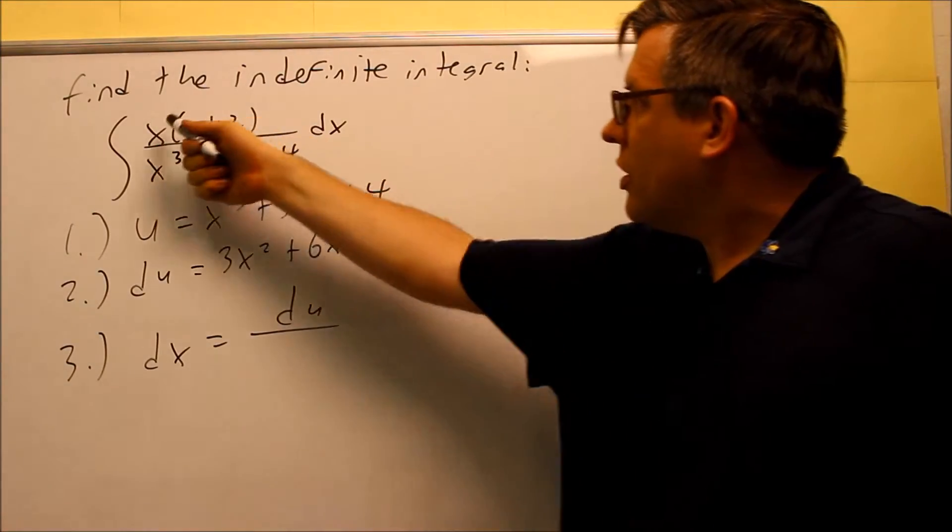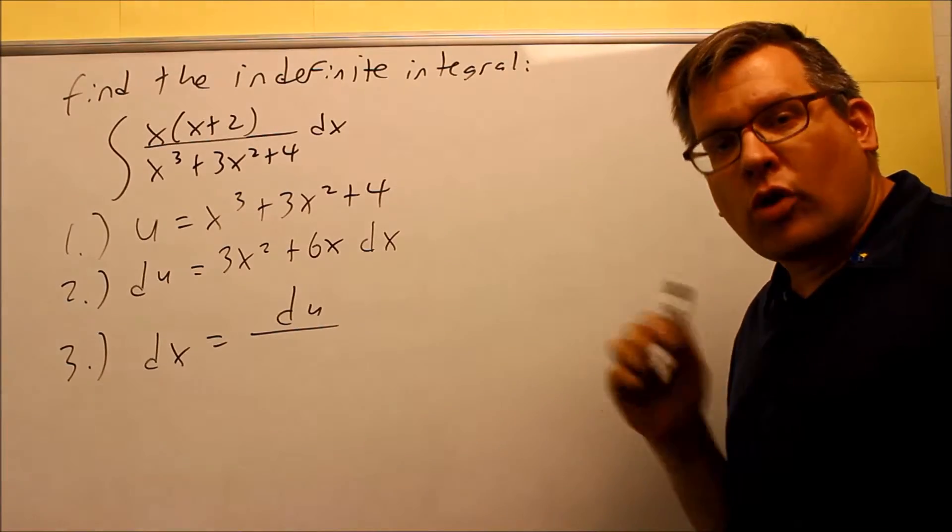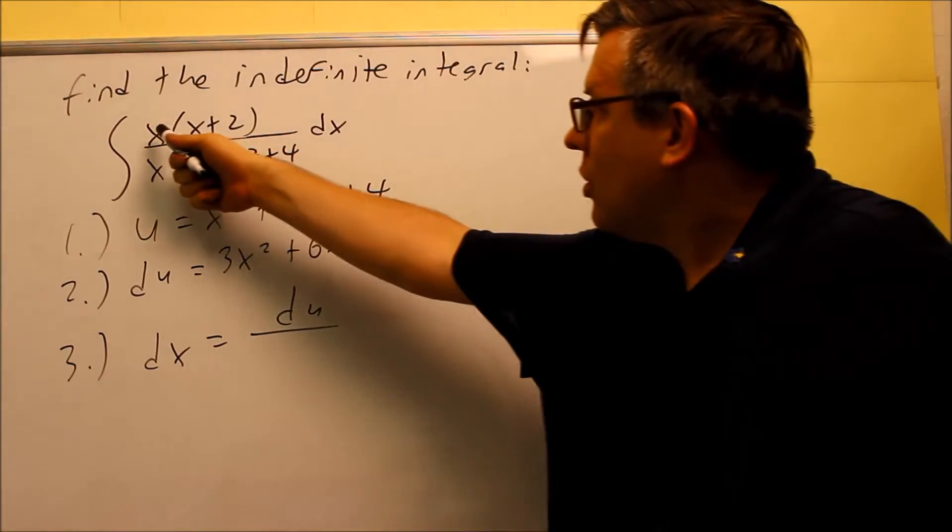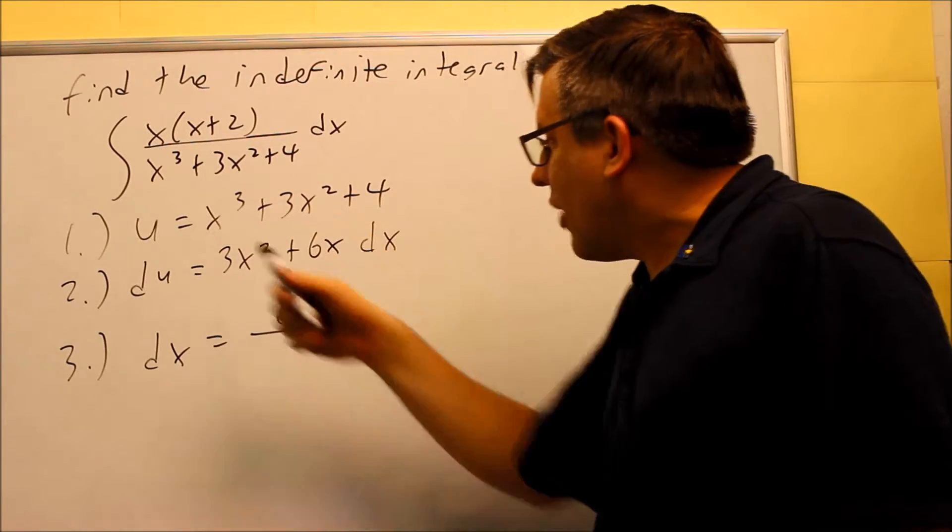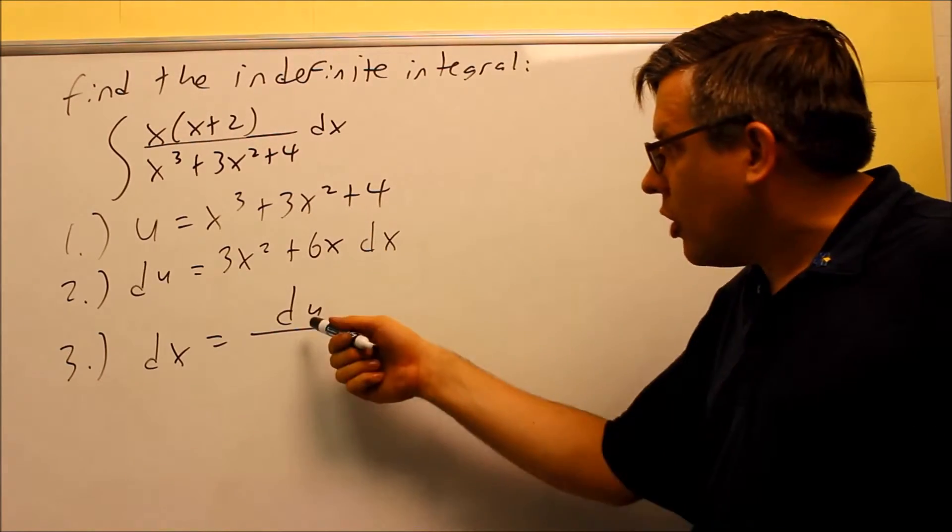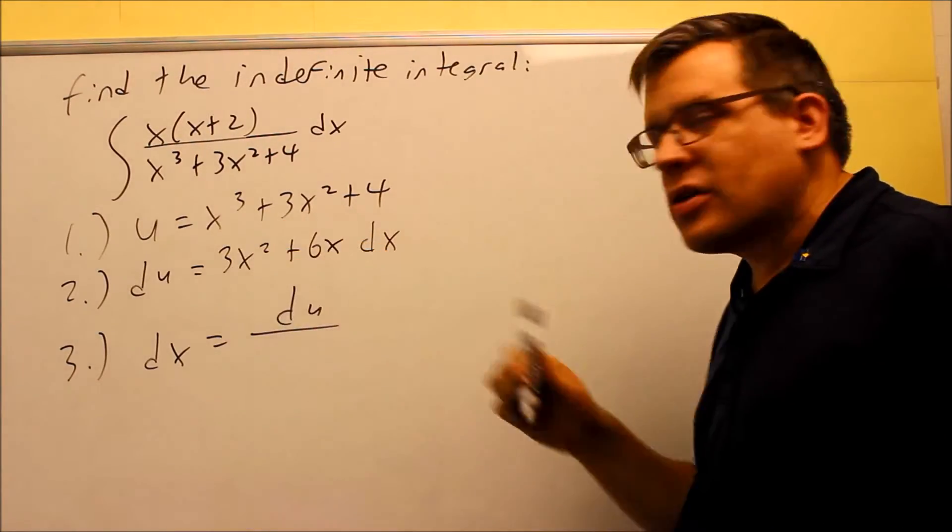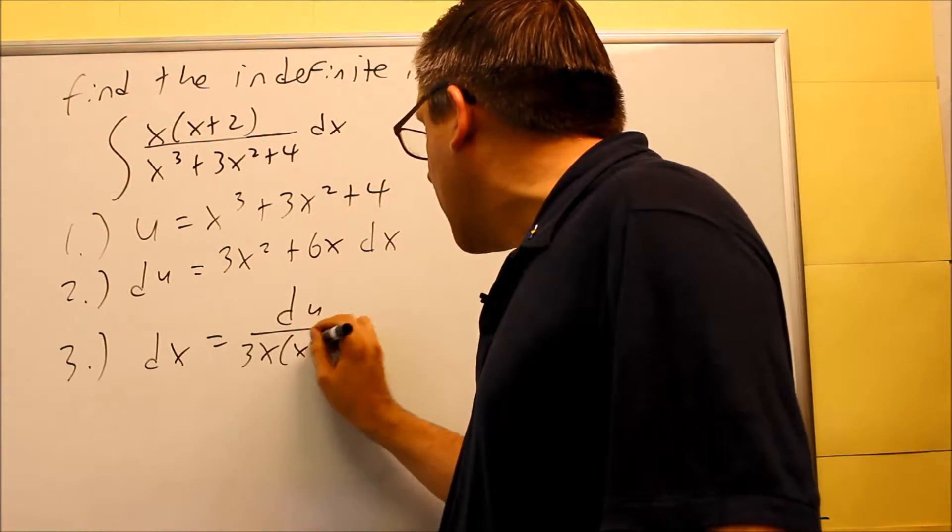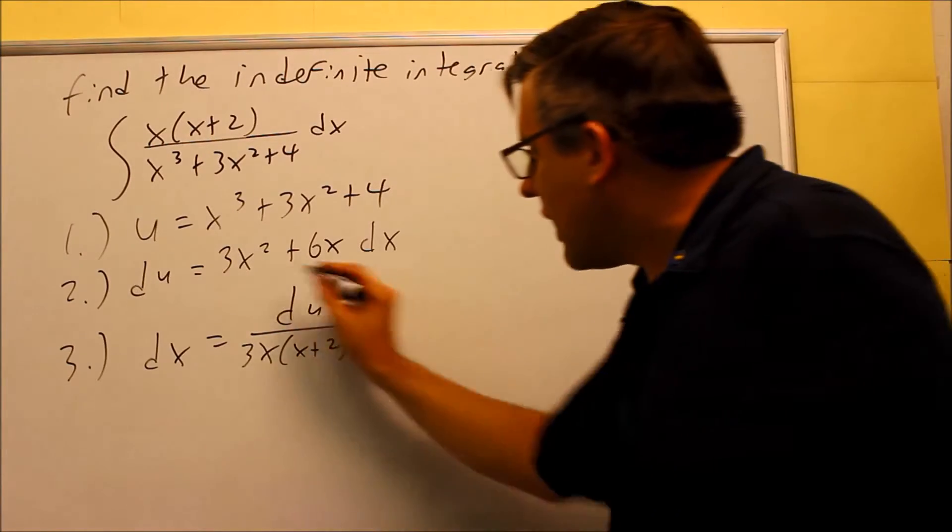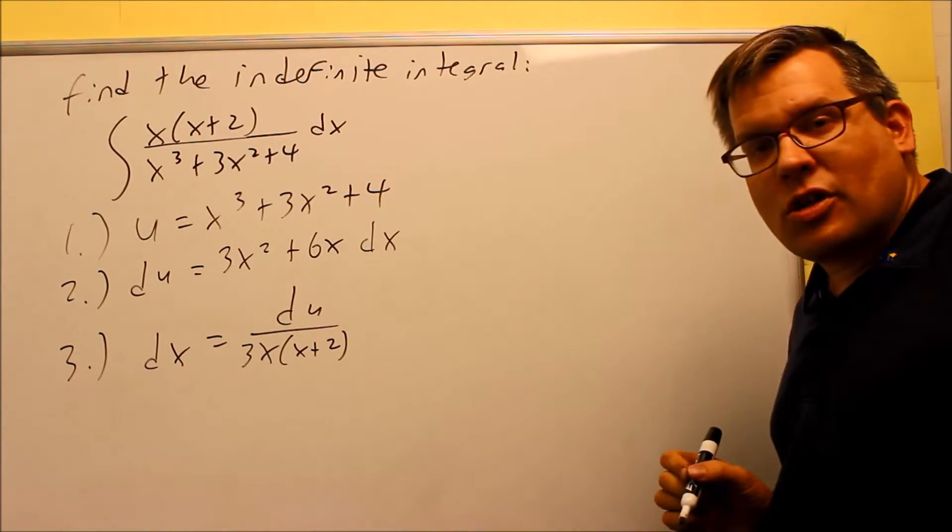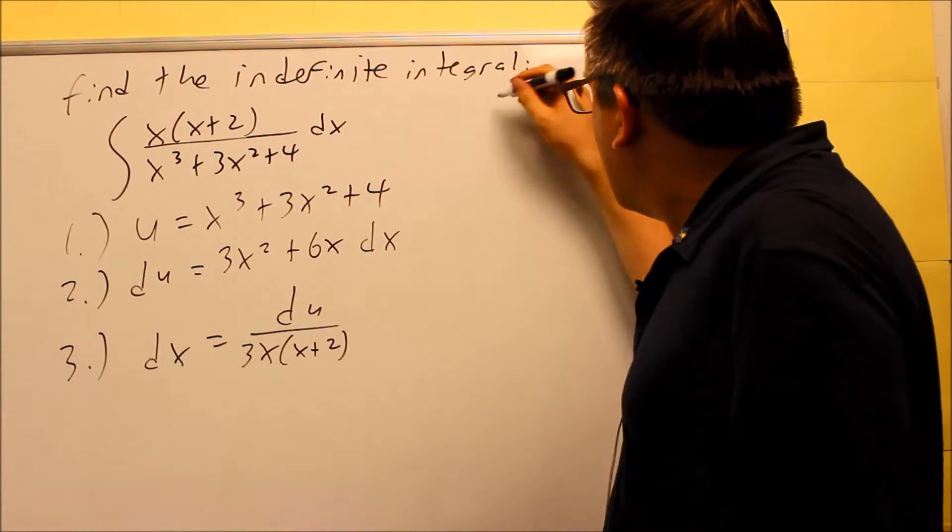Now, I notice that this one is in a factored form, so I need to do one of two things. I either need to multiply that part out, or what I'll do here is I'm just going to factor this part that would normally go on the bottom. So this 3x squared plus 6x, I can factor out a 3x from there, and that's going to give me an x plus 2 left over. So now I see here what my dx is going to be, and I'm ready to put it back into my integral.